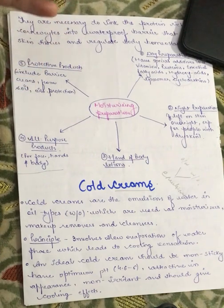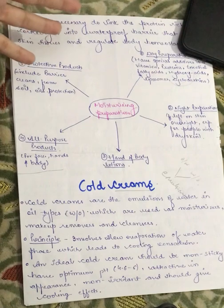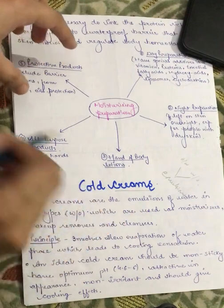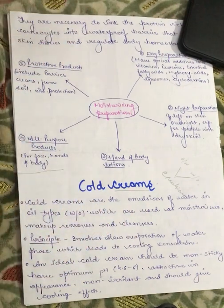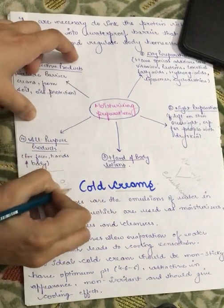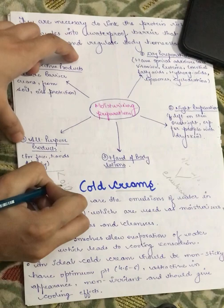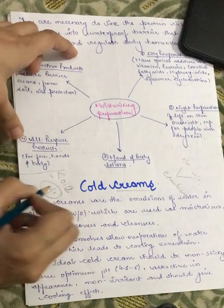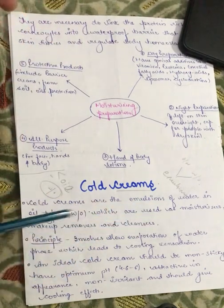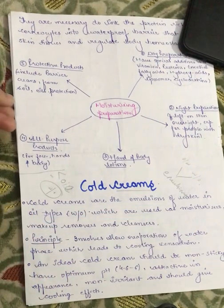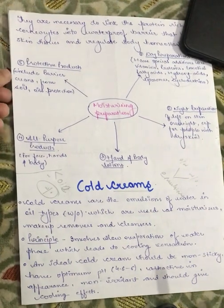In the preparation of emulsions we can have more water and less oil, or more oil and less water. On that basis we classify our emulsions. Cold creams have a very creamy texture and provide the skin with more moisture, meaning they are more oil-phase and less water-phase. So cold creams are water-in-oil type emulsions.